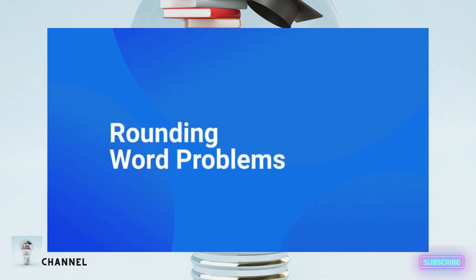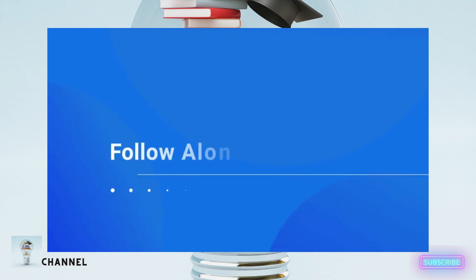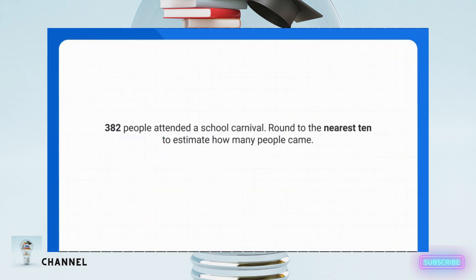Today, we're learning how to solve rounding word problems. I'm thinking about this problem: 382 people attended the school carnival. Round to the nearest 10 to estimate how many people came.